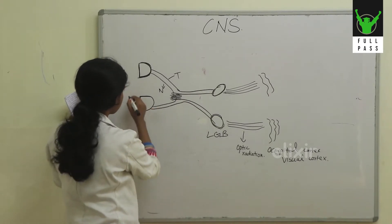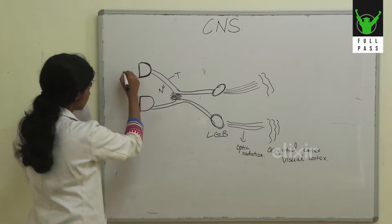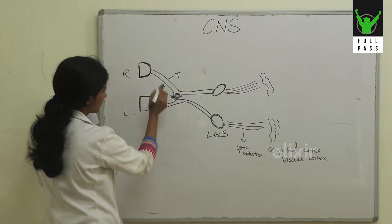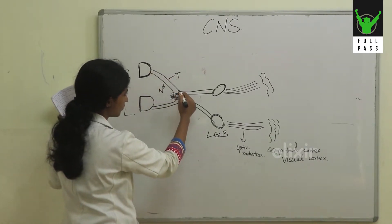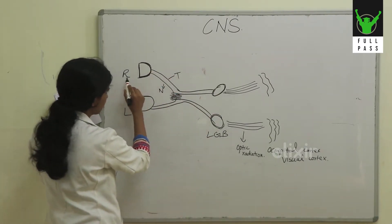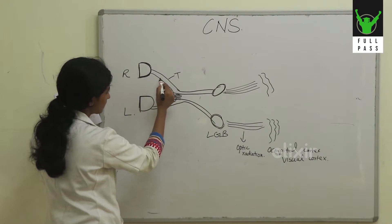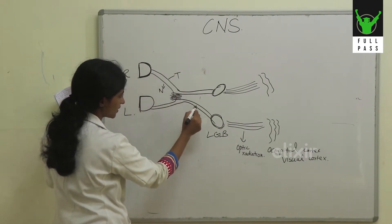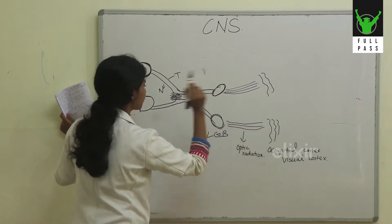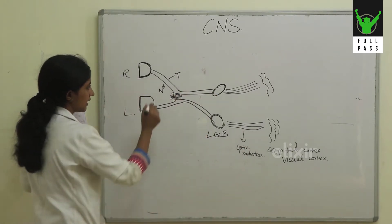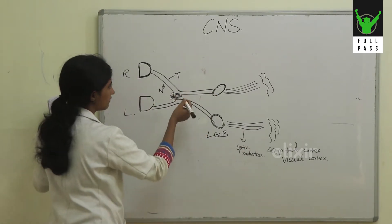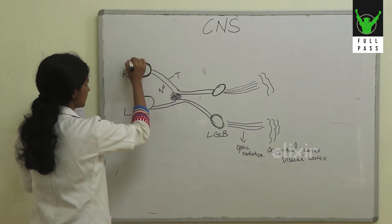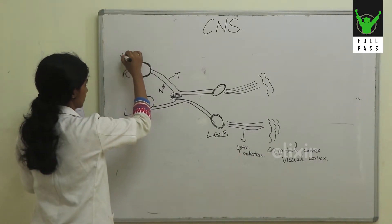Taking the right eye and the left eye: the temporal fibres of the right eye go straight across, but the nasal fibres of the right eye cross to the opposite side. One important thing is that the temporal fibres are concerned with the nasal field of vision.